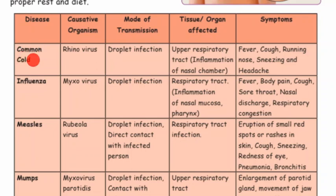Common cold: causative organism is rhinovirus, mode of transmission is droplet infection. The organ affected is the upper respiratory tract — inflammation of the nasal chamber. Symptoms include inflammation, fever, cough, running nose, sneezing and headache.